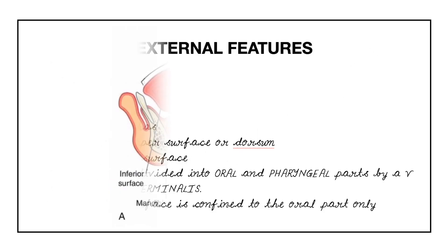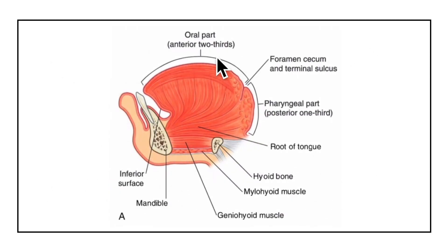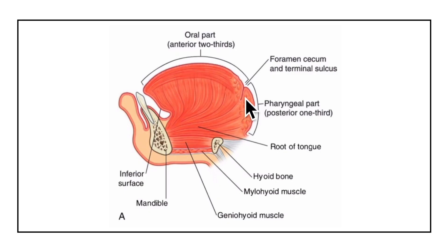The dorsum of the tongue is divided into an oral part and a pharyngeal part by a V-shaped sulcus called the sulcus terminalis, or the terminal sulcus, that you can see right here.